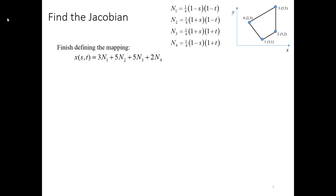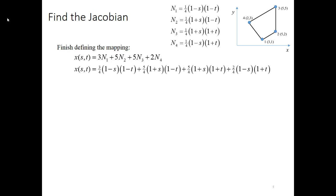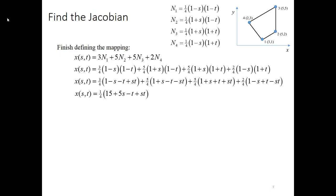Let's work through the definition of the mapping. X equals the x coordinate of the nodal positions multiplied by each shape function: 3N1 + 5N2 + 5N3 + 2N4 — where 3, 5, 5, 2 are the four x positions of the four nodes. Plugging in the shape functions and multiplying out, then gathering like terms, gives us the full expression for x. This is the mapping between X and the ST coordinate system. From that, we take ∂x/∂S and ∂x/∂T — those are two of the four terms we need for the Jacobian.